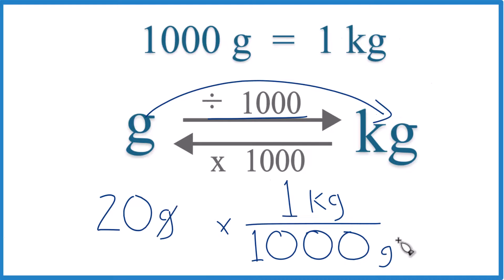Now when we multiply, grams cancels out. 20 times 1 kilogram, that's 20 kilograms divided by 1,000. And you get the same answer, 0.02 kilograms.